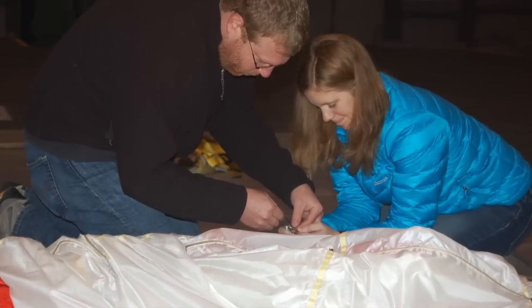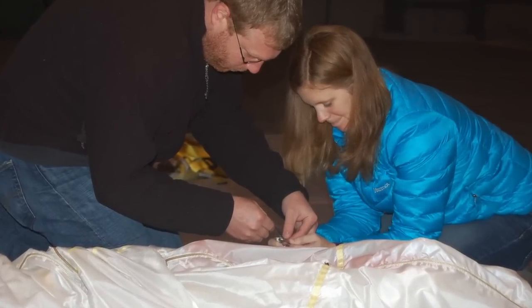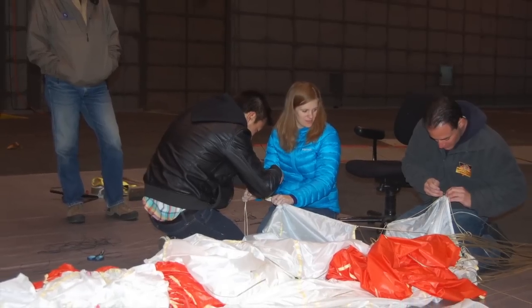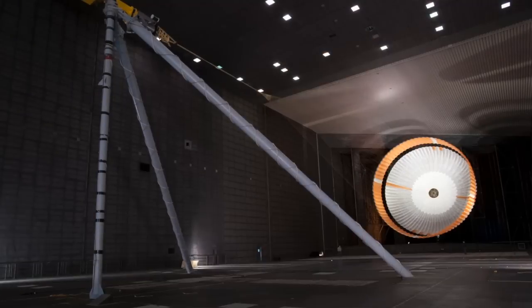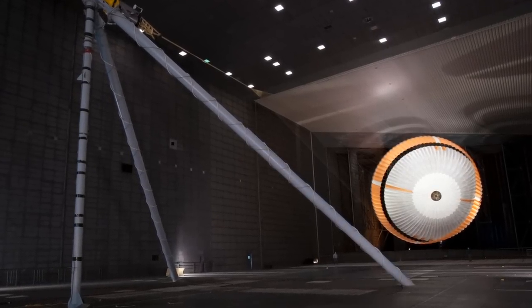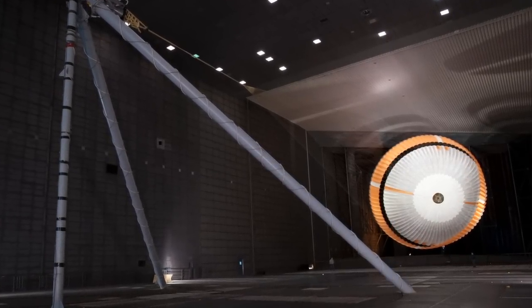One of the flow visualization techniques that we use is a technique called photogrammetry. Photogrammetry is basically target tracking so if we stick a target on a thing that we are interested in seeing how it moves in a wind tunnel we can then track the motion of this object. We use this frequently on parachute tests.